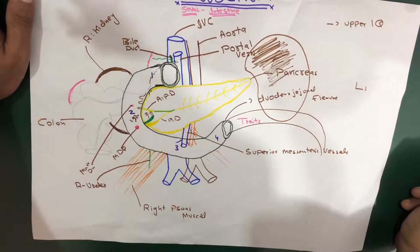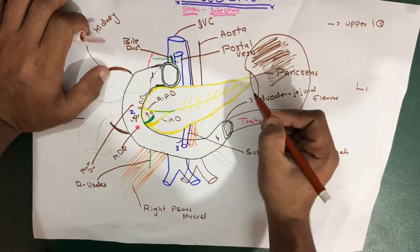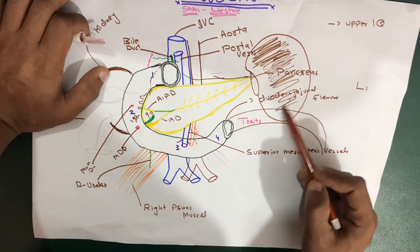One more thing about the spleen: it is an intraperitoneal organ, which means that it is covered by the peritoneum completely, except at the place of the hilum. The hilum is where other structures and vessels enter — the splenic artery and all structures entering the hilum. This area is actually not intraperitoneal; except for that, it is all intraperitoneal.